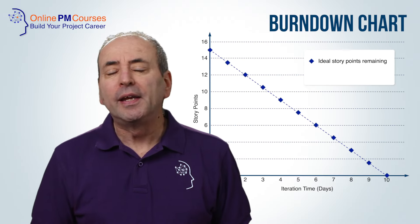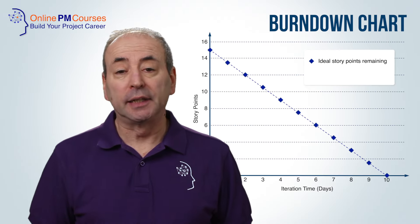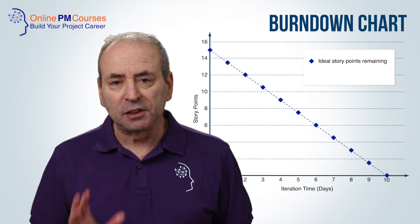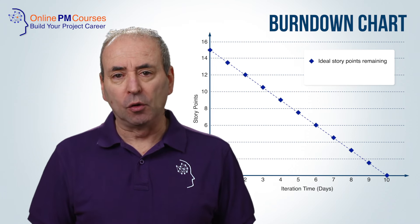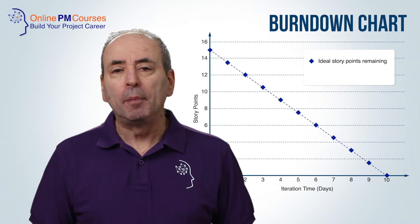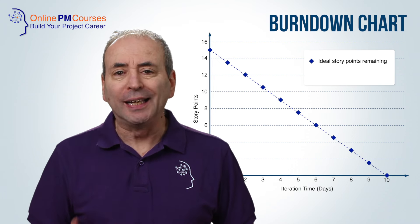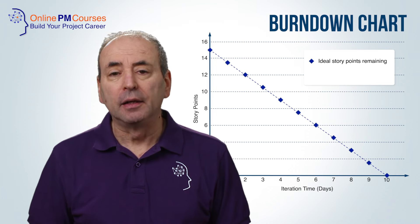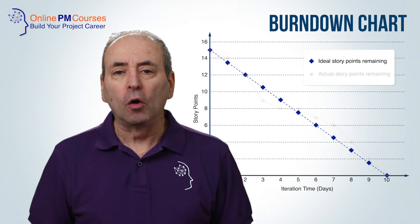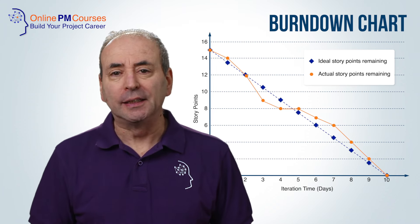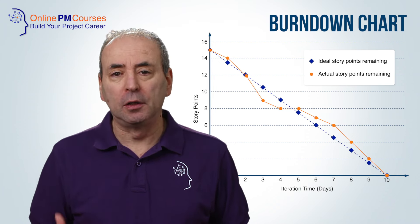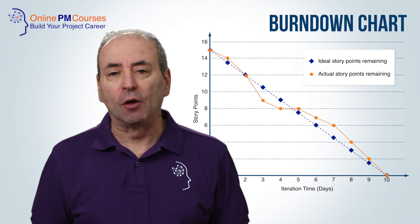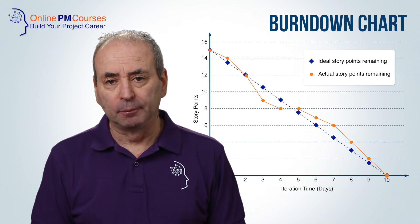We can get an idea of our progress against schedule if, at the start of a cycle, we plot an ideal work curve. Then, if we plot work completed onto the burn chart as we go, we can see how the two compare.